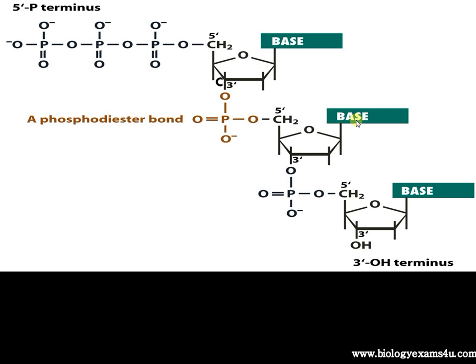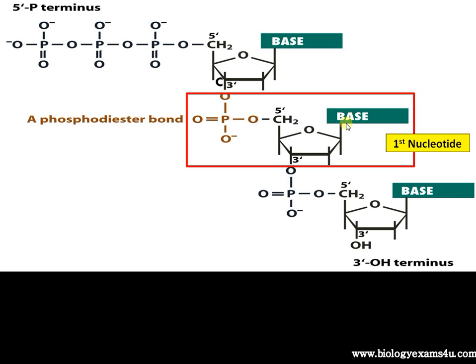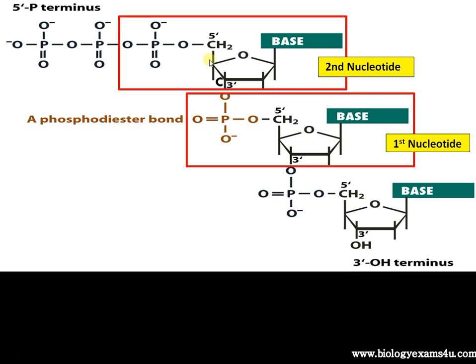First of all, let's start with the phosphodiester bond. This is the first nucleotide — it consists of a sugar, a nitrogenous base, and a phosphate group. This is a second nucleotide that consists of sugar, phosphate, and nitrogenous base. We are looking into how this phosphodiester bond is formed between these nucleotides.